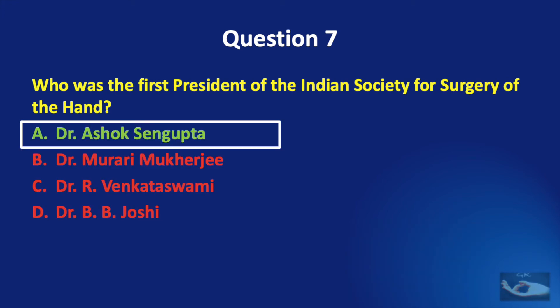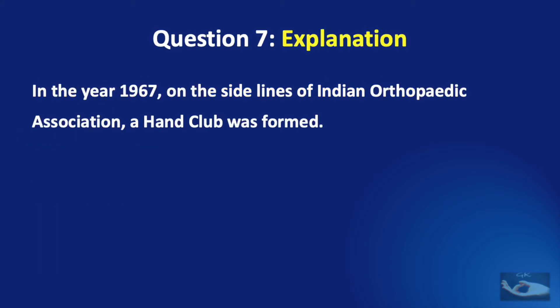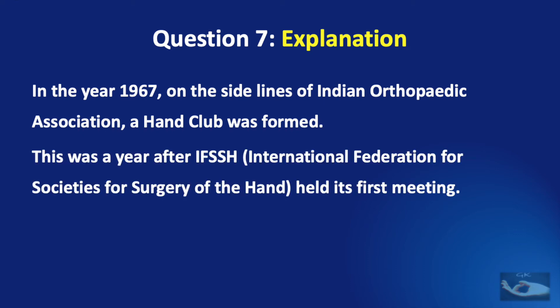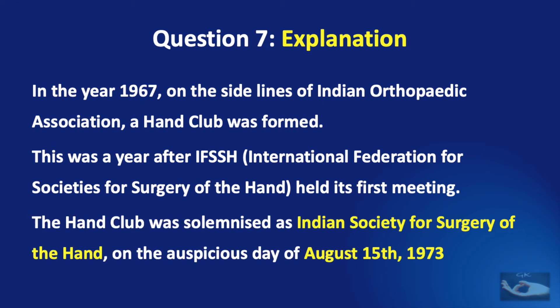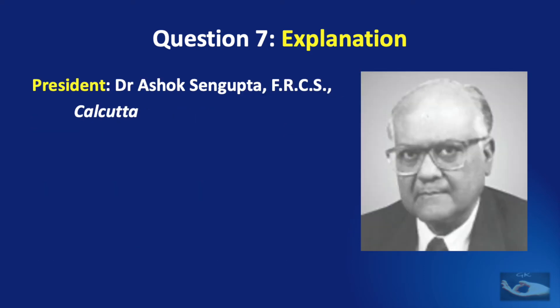The correct answer is Dr. Ashok Sengupta. In the year 1967, on the sidelines of the Indian Orthopedic Association, a hand club was formed. This was a year after IFSSH, the International Federation for Societies for Surgery of the Hand, held its first meeting. This hand club was solemnized as the Indian Society for Surgery of the Hand on August 15, 1973. The first president of this society was Dr. Ashok Sengupta from Kolkata.